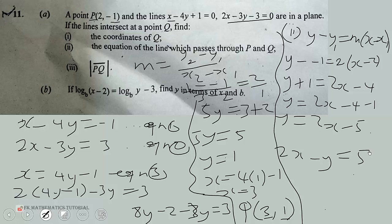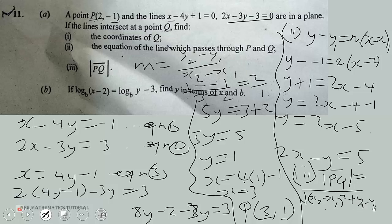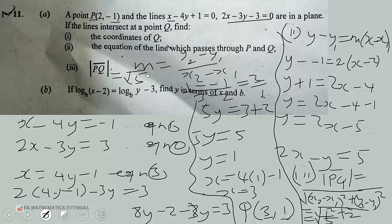Now we find the magnitude of line segment PQ, which is given by the square root of (x₂ minus x₁) squared plus (y₂ minus y₁) squared. We already found x₂ minus x₁ equals 1 and y₂ minus y₁ equals 2. So the magnitude equals the square root of 1 squared plus 2 squared, which is the square root of 5. The magnitude of PQ is √5 units.